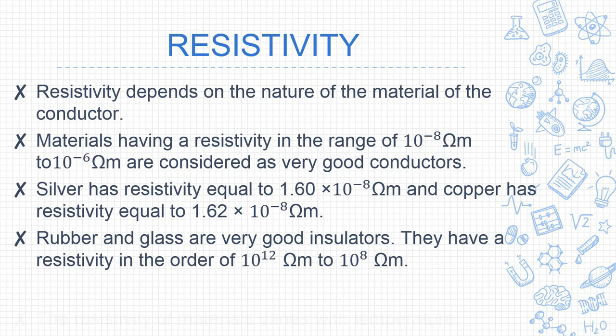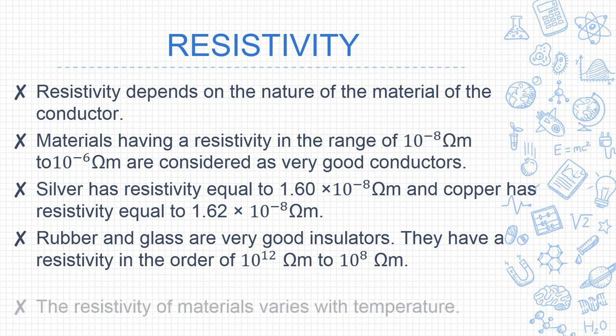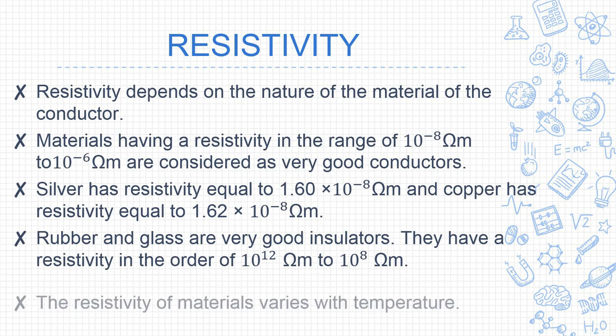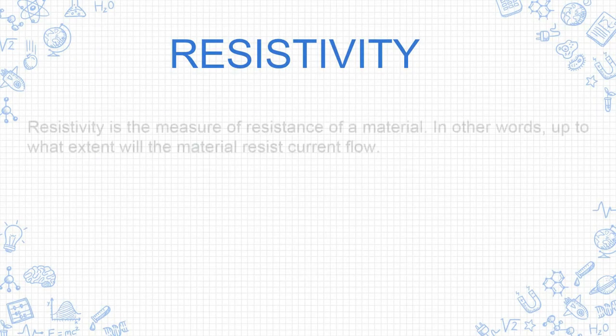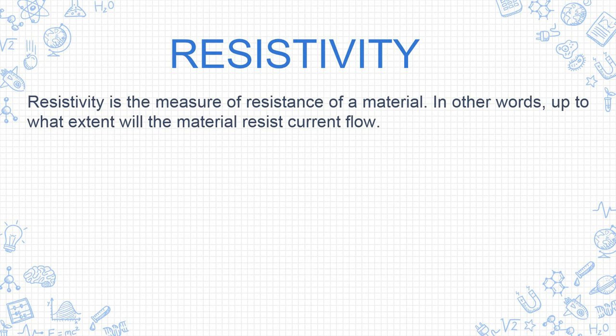Rubber and glass are very good insulators. They have resistivity in the order of 10¹² ohm meters to 10¹⁸ ohm meters. Resistivity of materials also varies with temperature.